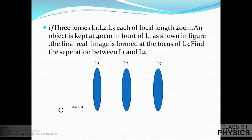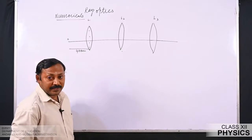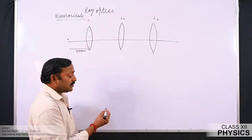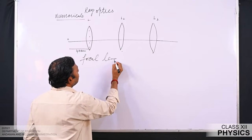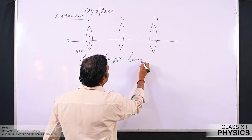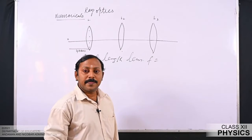An object is kept at 40 centimeter in front of L1 as shown in the figure. The final real image is formed at the focus of L3. Find the separation between L1 and L2. We have 3 lenses L1, L2, L3 with the same focal length f equal to 20 centimeter.